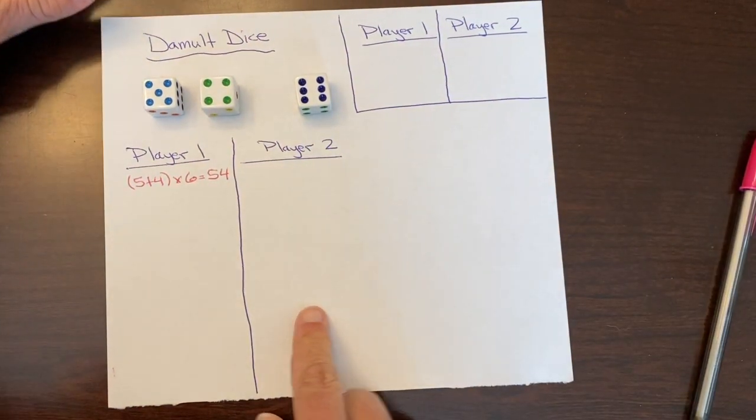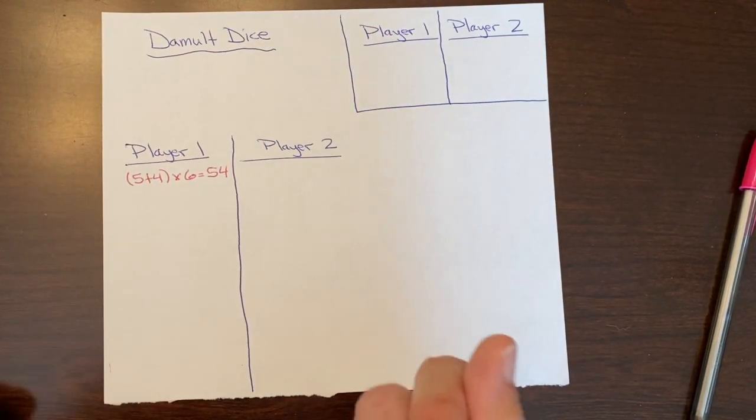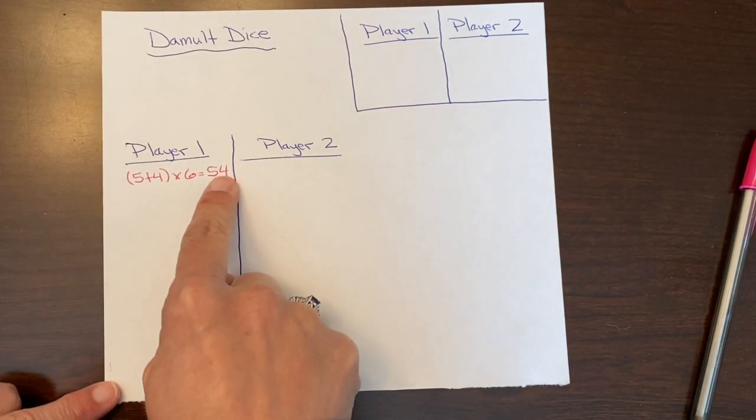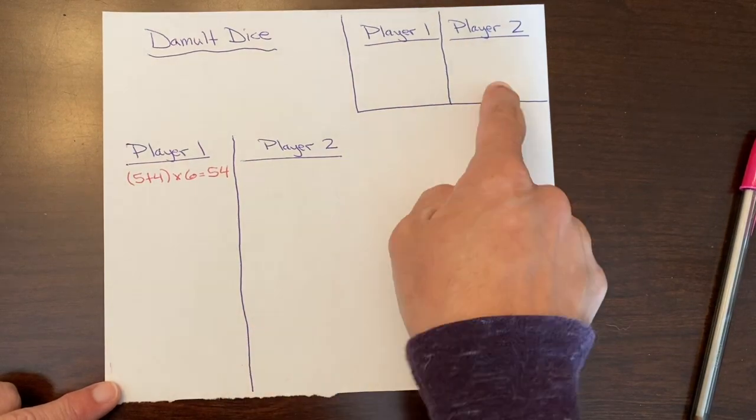Okay, now it's player 2's turn. Player 2 is trying to create a total that's greater than 54. If player 2 does that, they earn the point.